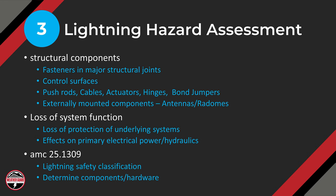Continuing with the lightning hazard assessment, we're looking at structural components including fasteners, major structural joints, control surfaces, push rods, cables, actuators, hinges, bond jumpers, and externally mounted components like antennas and radomes. We're also looking at loss of system function — for example, if a strike to the structure damages a nearby power cable, that subsequent effect on the aircraft is still due to a lightning direct effects strike, so you need to be looking at effects on systems as well.